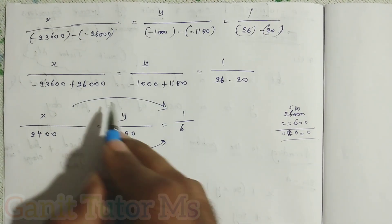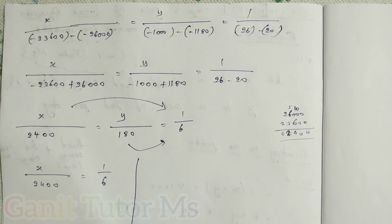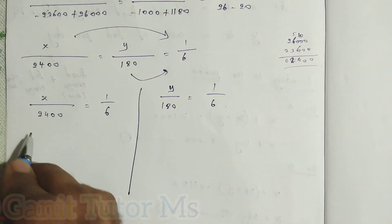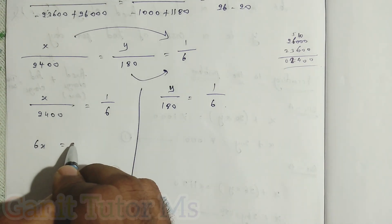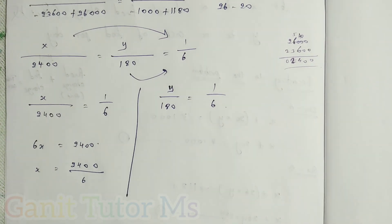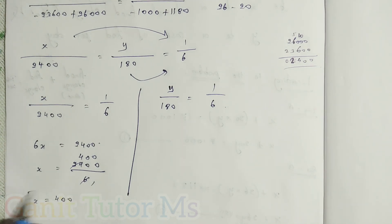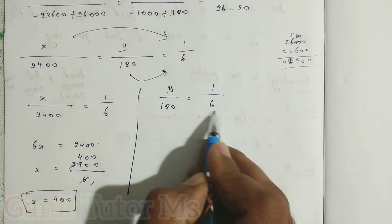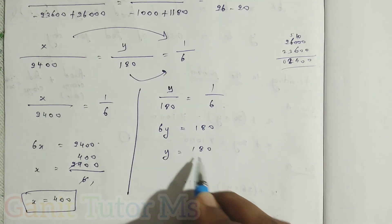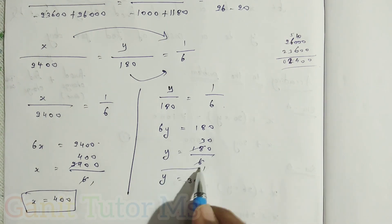Taking first and last terms: x divided by 2,400 equals 1 by 6. Cross multiplying: 6x equals 2,400, so x equals 400. Taking second and last terms: y divided by 180 equals 1 by 6. Cross multiplying: 6y equals 180, so y equals 180 divided by 6, which gives y equals 30.